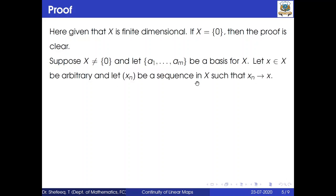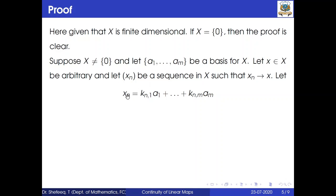Let x belong to X be arbitrary and let {xn} be a sequence in X such that xn converges to x. Since a1, a2, ..., am is a basis for X, any element xn in X can be written using these basis elements: xn = kn1·a1 + ... + knm·am, and similarly x = k1·a1 + ... + km·am.